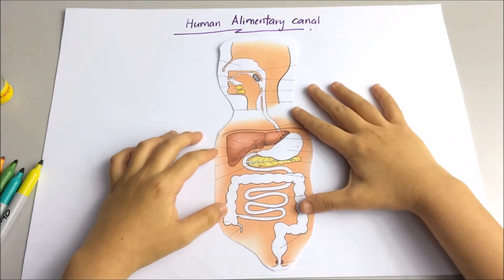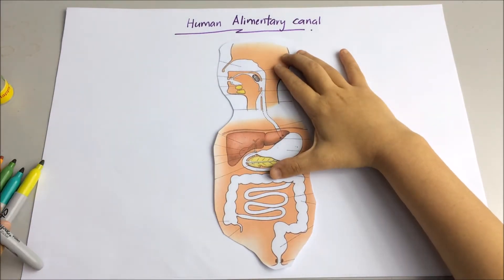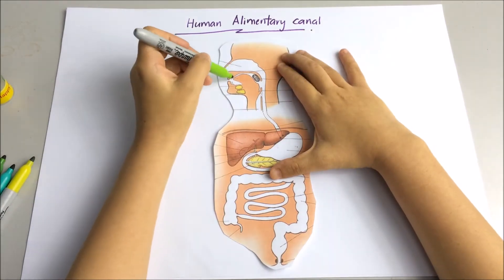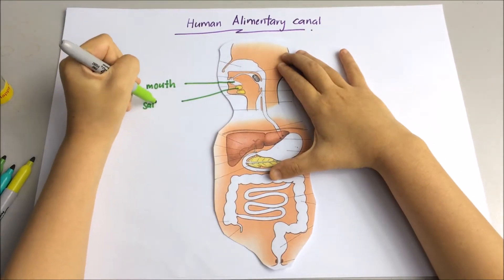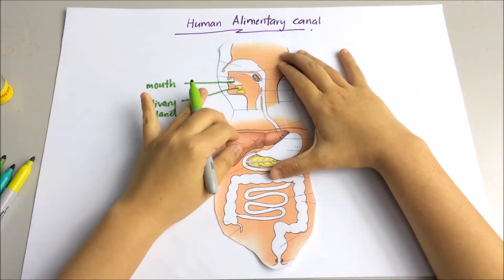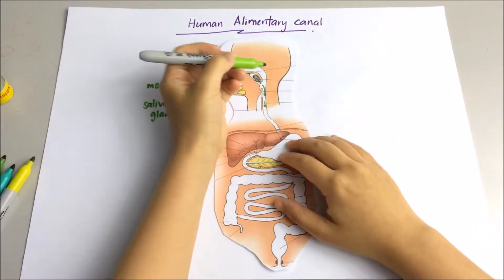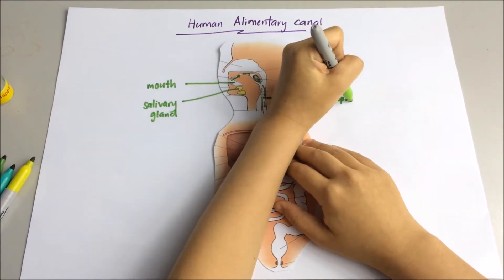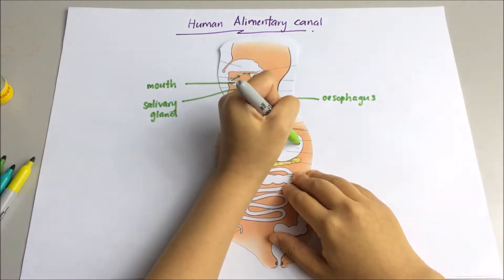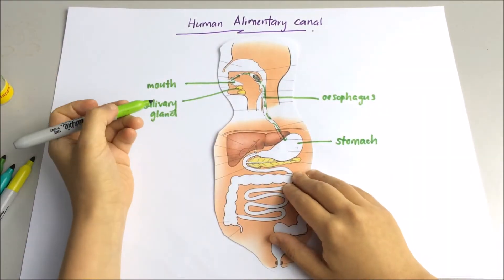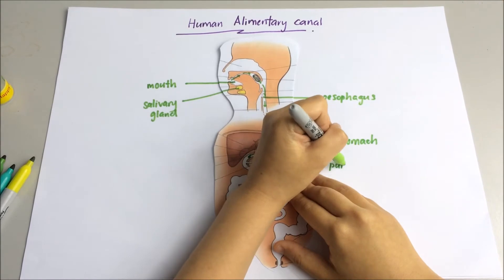Now let's look at the picture of our digestive tract. The human digestive tract is about seven to nine meters long. It begins with the mouth, and this is the salivary gland which functions to secrete saliva. From the mouth, then followed by esophagus, then stomach, and this is the pancreas.